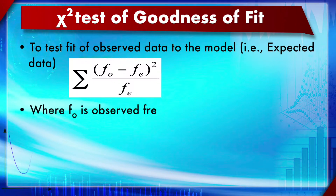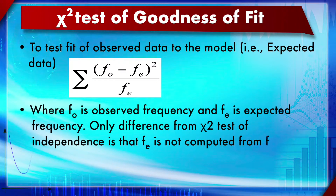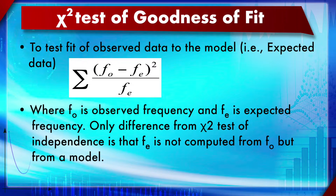The chi-square test of goodness of fit tests the fit of observed data to the model or expected data. fo is observed frequency and fe is expected frequency. The equation is the same — sigma (fo minus fe) squared divided by fe — but the key difference is that fe is computed from an explicit model, not from fo.